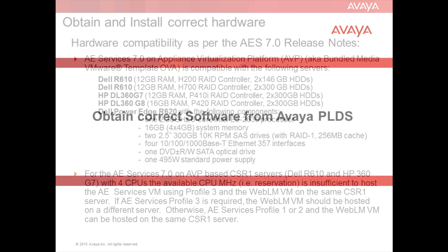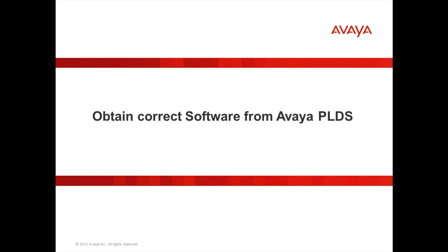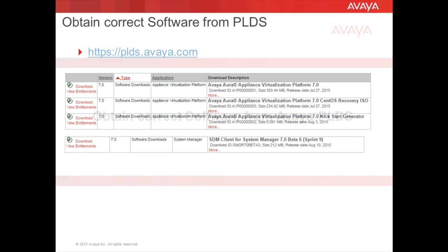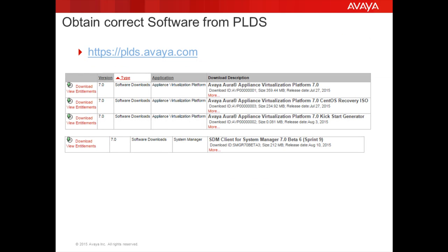Next, you will need to download the required software from Avaya PLDS. Once you have logged into the PLDS site, search the Download section for Appliance Virtualization Platform Version 7 Software. The results should contain links to download the Avaya Virtualization Platform, a recovery CD — which can be used if you need to roll back to system platform — and the kickstart generator file, which helps you to create a kickstart file for installing AVP.